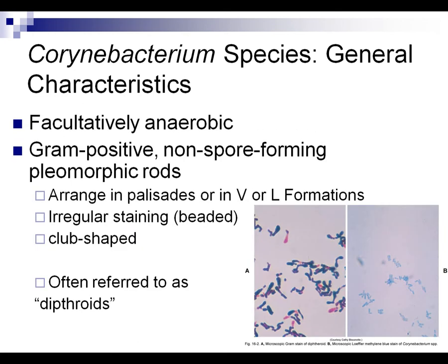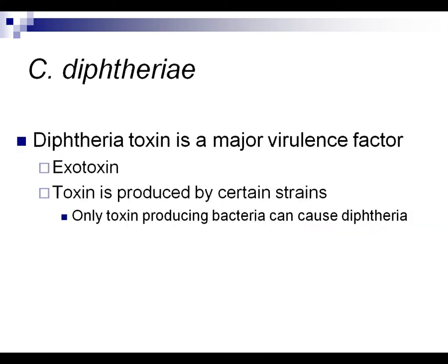Corynebacterium is mostly normal flora and is found all over the body. It has these club-shaped ends — they're often referred to as diphtheroids. So you've got gram positive rods all over your body and they're normal flora most of the time.